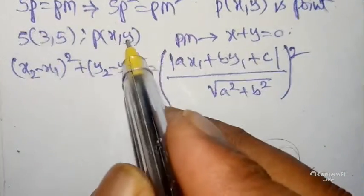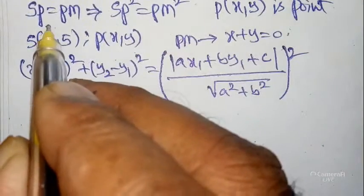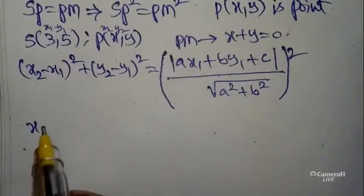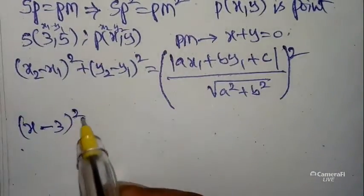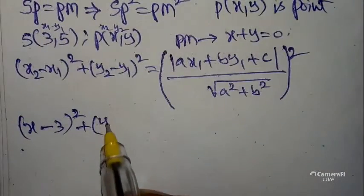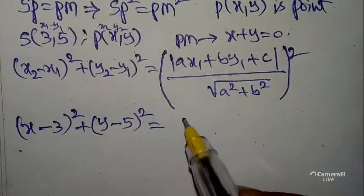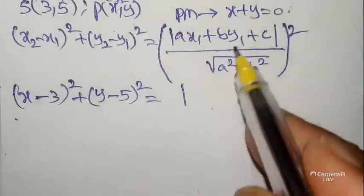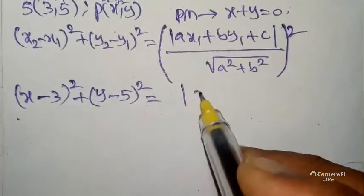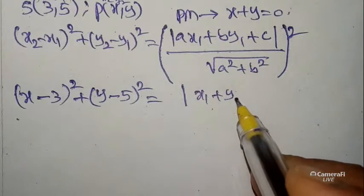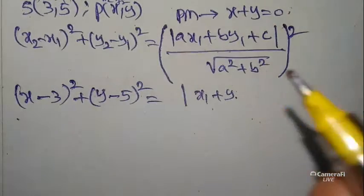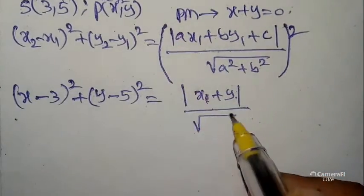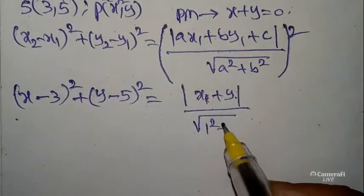Substituting: (x − 3)² + (y − 5)² = (x + y)² / (1² + 1²). The directrix is x + y = 0, so the perpendicular distance from P = (x, y) to this line is |x + y| / √2. Therefore PM² = (x + y)² / 2.